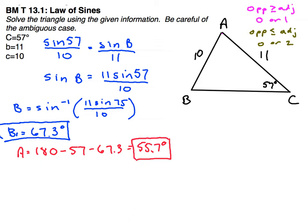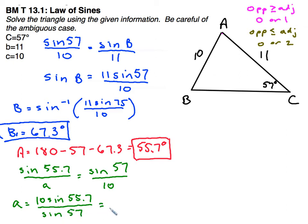Last is to find side A. I'll use the law of sines again to find side A. The sine of 55.7 over A is going to equal the sine of 57 and 10 again. So A is going to equal 10 sine 55.7 divided by the sine of 57, and rounded to two places, I get 9.85.